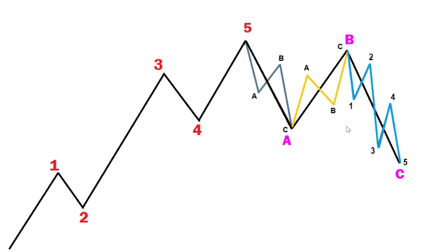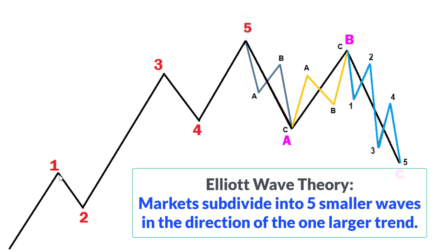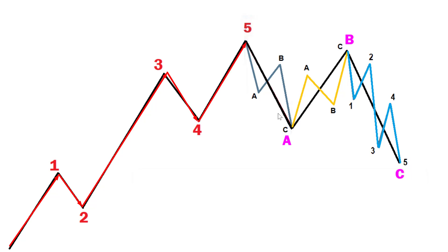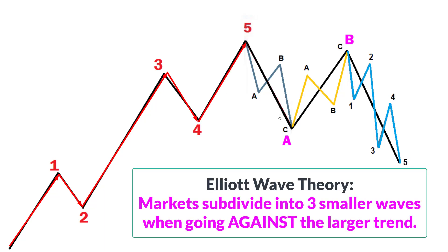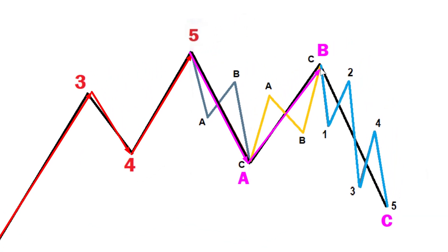What I'm showing you here is the Elliott Wave Theory model. According to Elliott Wave Theory, markets tend to trend in five waves. Market prices subdivide into five waves when they're going in the direction of one larger trend — one, two, three, four, five. However, they subdivide into three waves when they're going against the one larger trend — A, B, C. Notice that what you're seeing here is what's called a correction, a corrective wave.